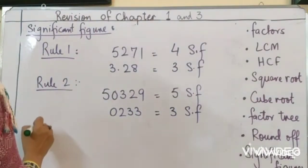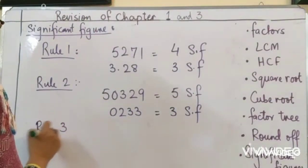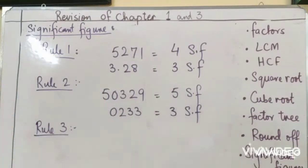Next, rule 3. Read rule 3. Looking at the book also. All right. In a decimal, all zeros after a non-zero digit are significant. What does this mean?